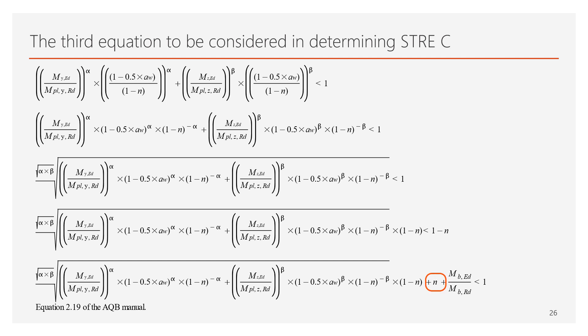In order to obtain the third equation that is taken into account by assessing the utilization level with the STRE-C command, this time we take equation 6.41, exactly as it is given in the EN 1993.1.1. For the sake of getting the same unit as for the previous equations, we must bring the equation of 6.41 under the root of square root of alpha times beta. Then, similarly, to overcome the same problem of the appearance of 1 minus n in the denominator, both sides of the equation will be multiplied with 1 minus n.